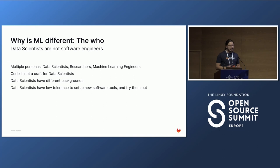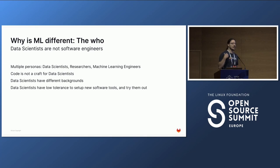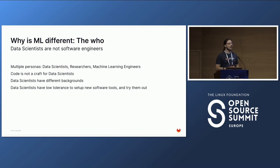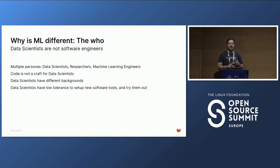The first difference is the who. Data scientists are not software engineers. We are still trying to apply software engineering solutions to data scientists, but they are a different crowd with a different background. Most data scientists I've worked with don't come from a computer science background — they come from philosophy, geology, chemistry, econometrics. It's one of the most diverse crowds I've ever worked with. And within those folks, code is not a craft. For software engineers, one of the final deliverables is code, but for data scientists that's not the case — the deliverable might be an analysis or a model.